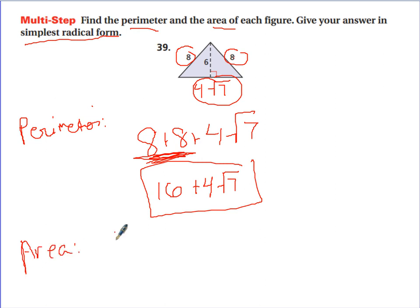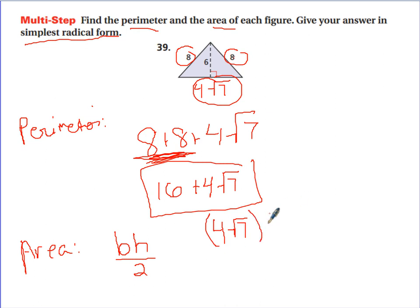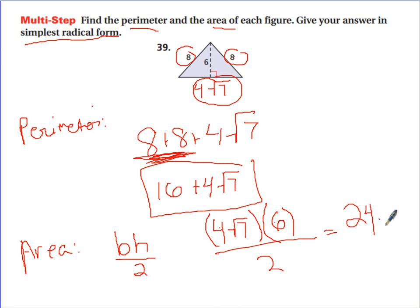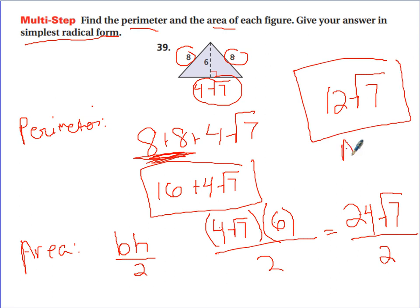For area, remember the area of a triangle is base times height divided by 2. The base is 4 square root of 7 and the height is 6. So that's 4 square root of 7 times 6, divided by 2. 4 times 6 is 24 square root of 7, divided by 2 gives 12. So the area is 12 square root of 7.